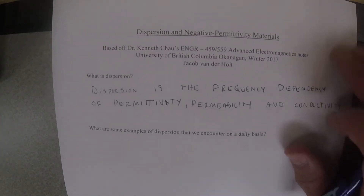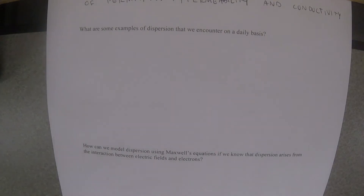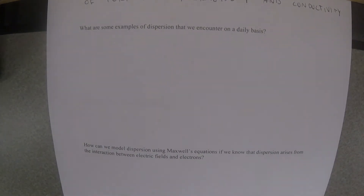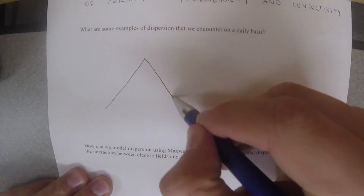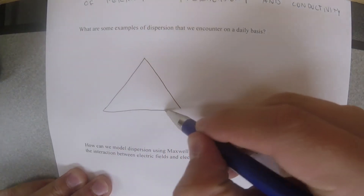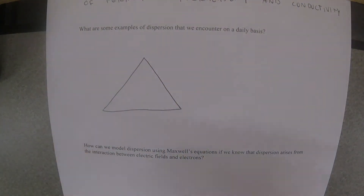I'm sure everybody comes across dispersion every day in their daily lives, but they may not necessarily know the exact math behind it, which is what I'm going to try and teach here. So what are some examples of dispersion that we encounter on a daily basis? There are many examples, but I think one of the most simple to grasp is a prism.